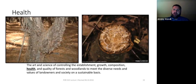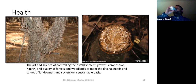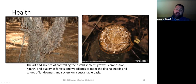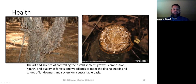Forest health is going to be important. Examples include red bay ambrosia beetle, a fungus killing red bay and sassafras, and emerald ash borer. A big one we'll discuss this week is fusiform rust — a gall on loblolly pine, a naturally occurring soil-borne pathogen that can take a lot of value out of your stand. But we can address that with genetics, breeding for fusiform rust resistance.